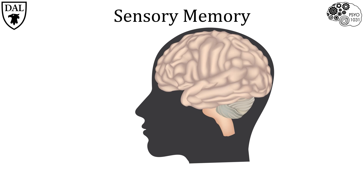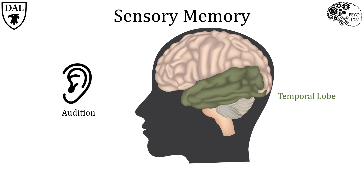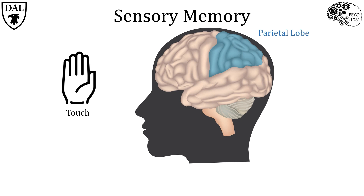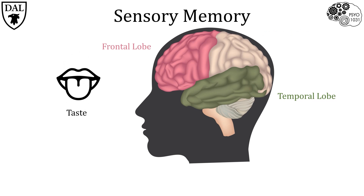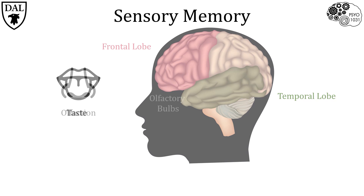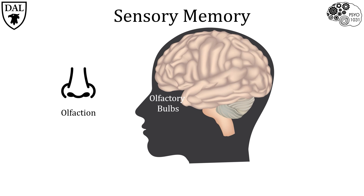Vision is primarily processed in the occipital lobe. Audition, as might make sense, is processed in the temporal lobe right next to the ears. Touch is processed in the somatosensory cortex, which lies in the parietal lobe. Taste is processed in the frontal and temporal lobes. And lastly, smell or olfaction is processed in the olfactory bulbs.